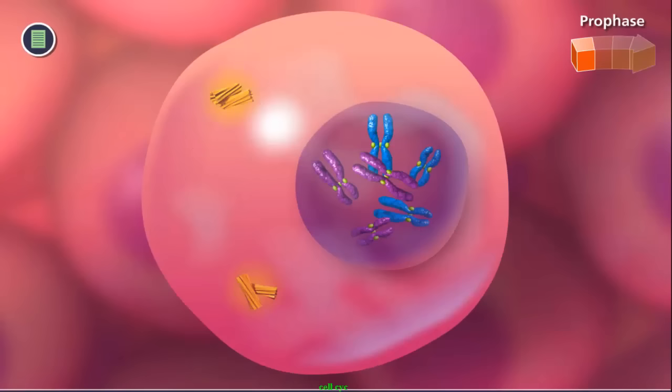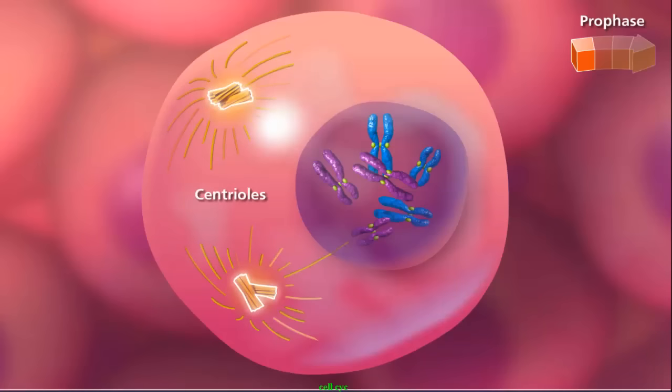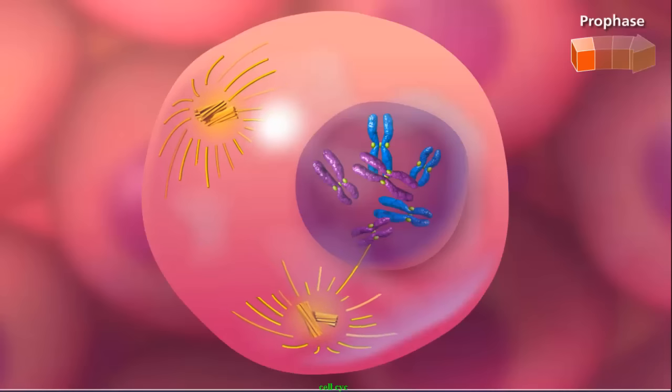The cytoskeleton disassembles as the spindle begins to form. In animal cells, centrioles play an important role in the distribution of the chromosomes in the dividing cell. The centrioles migrate to opposite poles,